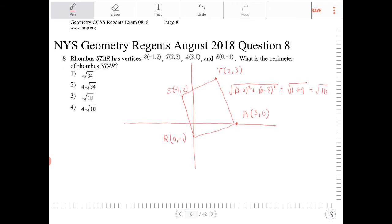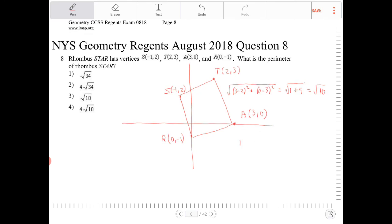Because a rhombus has all four sides the same length, I'm not going to find the other three sides, because I already know they must be the same. Therefore, the perimeter must equal 4 times radical 10, which is option 4.